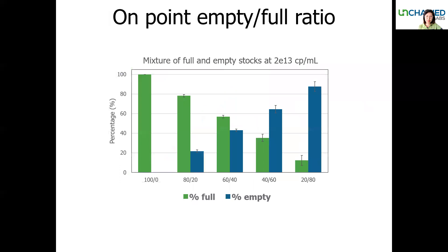Stunner gets you accurate full/empty ratio measurements. Here we test the accuracy by taking a known full and empty stock of AAV at 2×10¹³ cp/mL concentration. We titrated them into each other with the expected ratio shown on the x-axis. If you look at the 100% full capsid stock on the first axis, the Stunner is showing 100% full ratio. Continuing with the titration from 80, 60, to 40% full, you can see the Stunner is showing great agreement with the expected ratios.